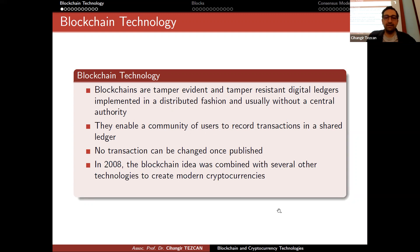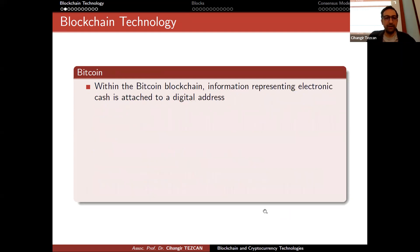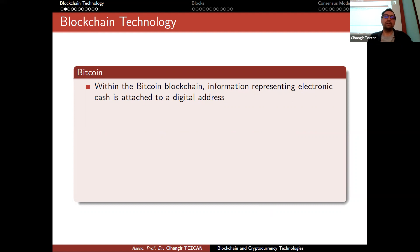In 2008, the blockchain idea was combined with several other technologies to create modern cryptocurrencies. The first such blockchain-based cryptocurrency was Bitcoin. Within the Bitcoin blockchain, information representing electronic cash is attached to a digital address — which, as we have already seen, is actually a hash of a point on an elliptic curve.